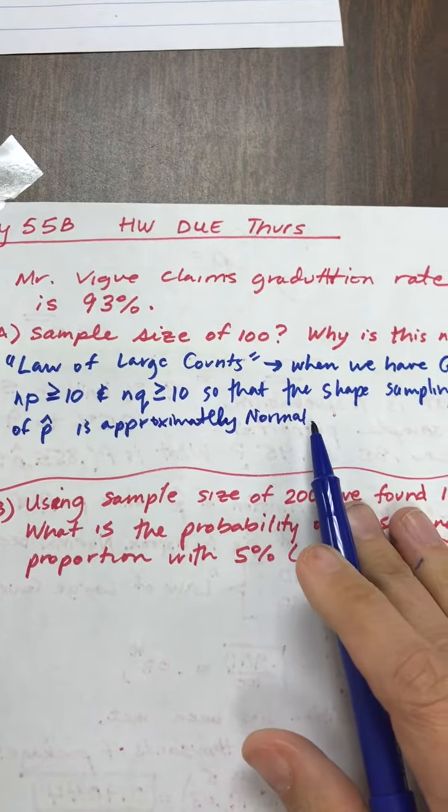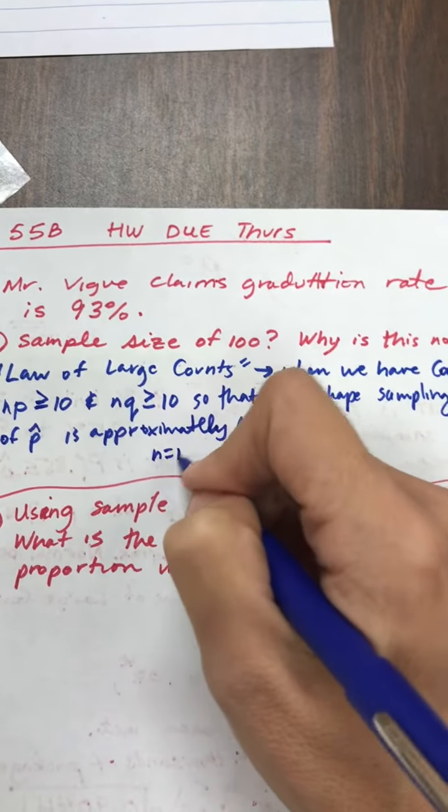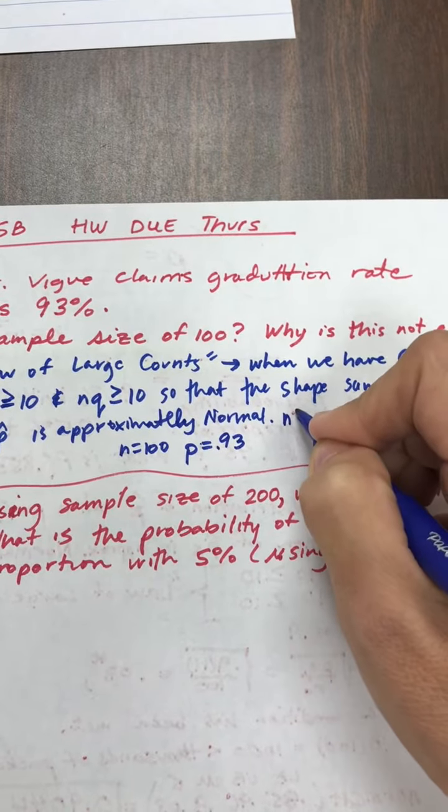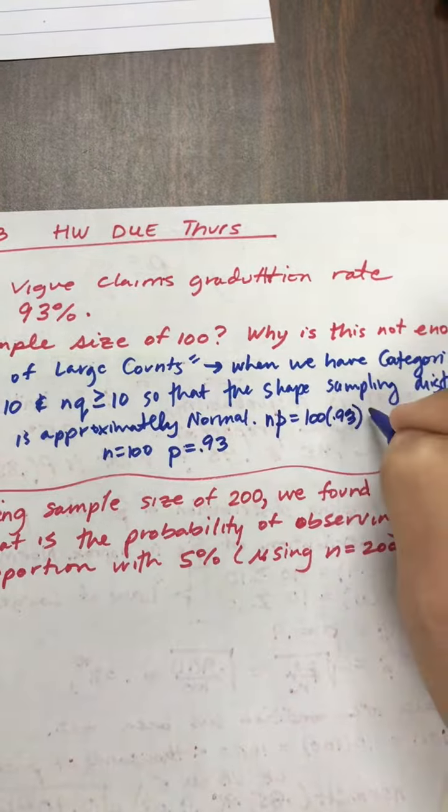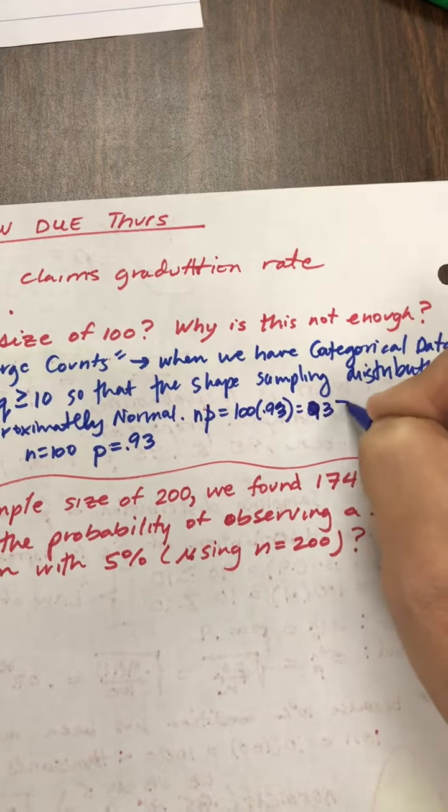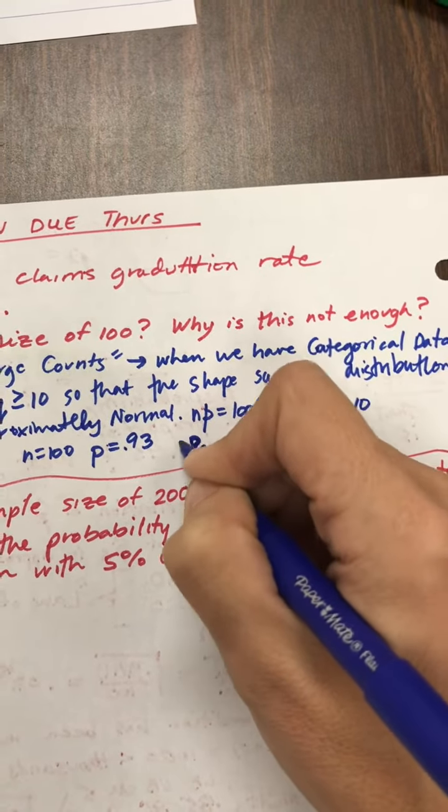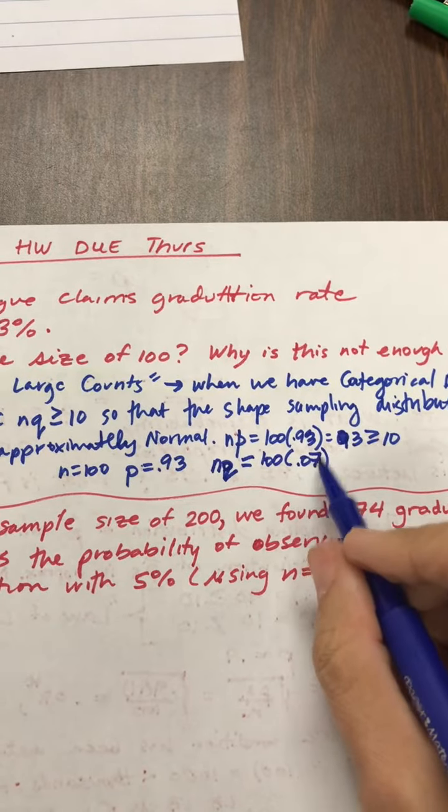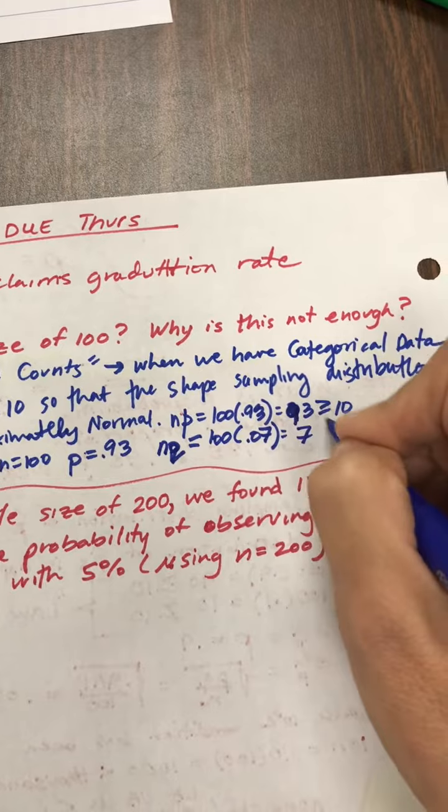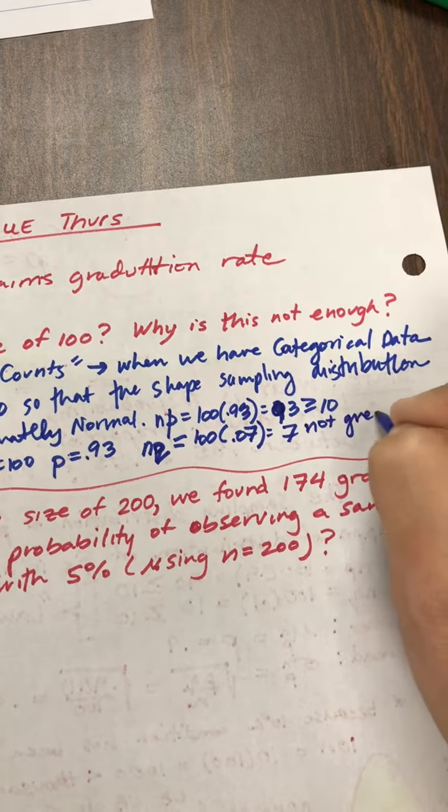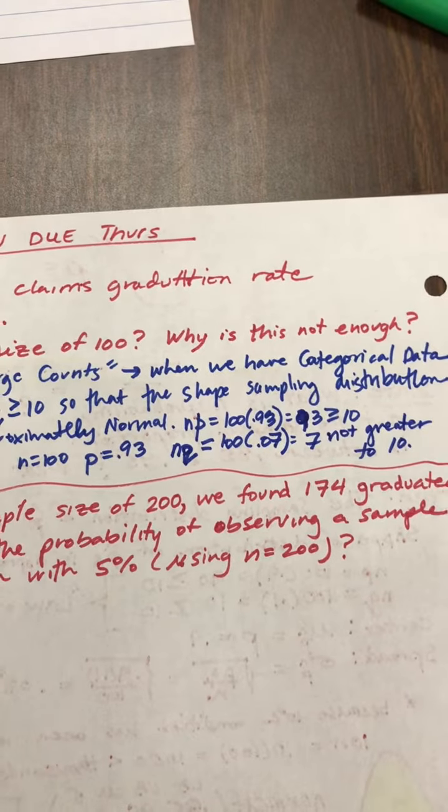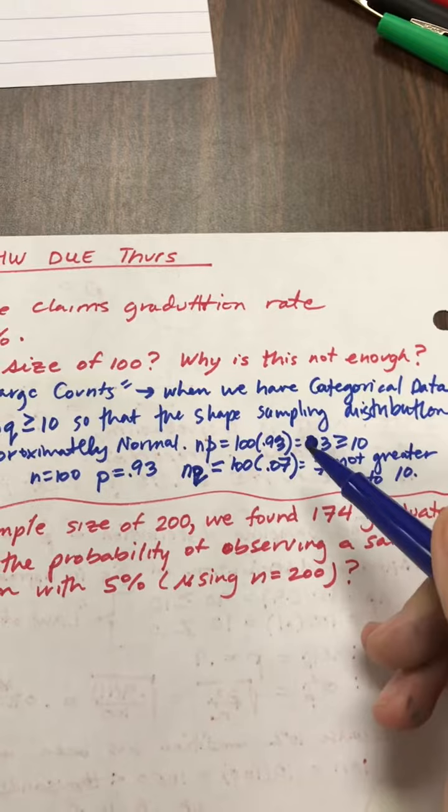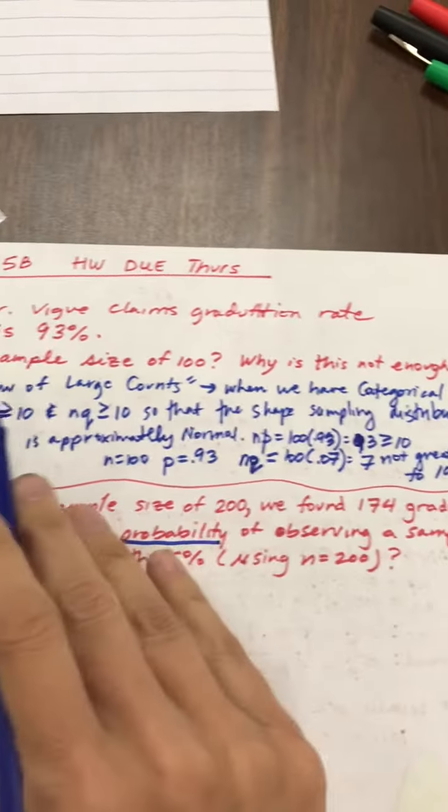So in this case, we notice that if n is in fact 100, and p is the claim 0.93, then n times p would be 100 times 0.93, which would be 93, and there's no problem there, that's greater than or equal to 10. But then when I take n times q, or the complement, 100 times 0.09, so that would mean 7% of people don't graduate. We're only expecting 7 people to not graduate, and that's not greater than or equal to 10. So for the purpose of wanting to utilize normal approximation data to find probabilities, and that's what we're trying to do here, we need a larger sample size, and that's why it's not really enough.